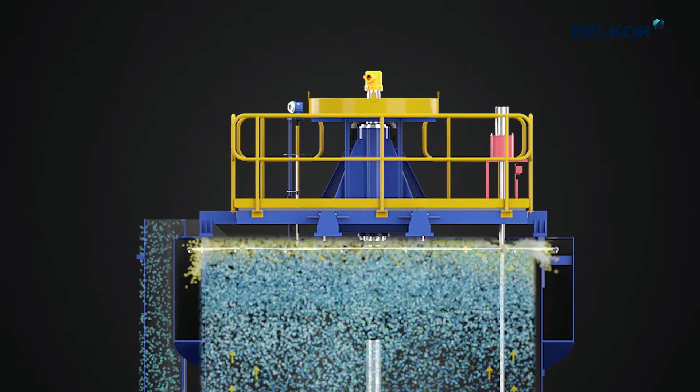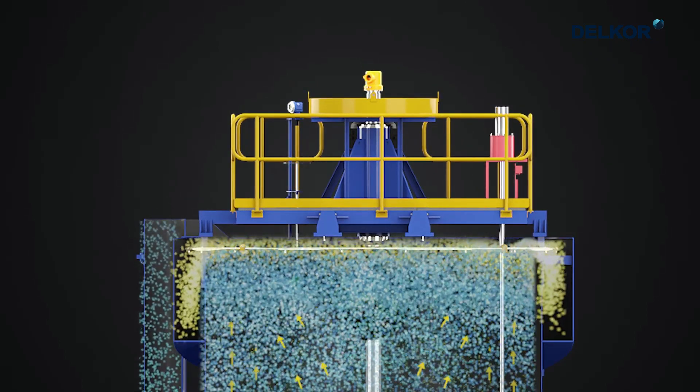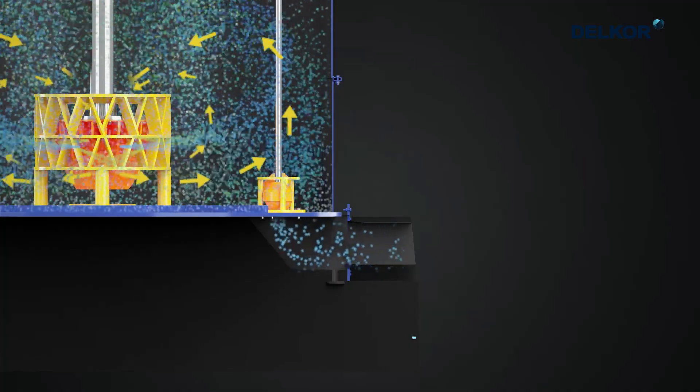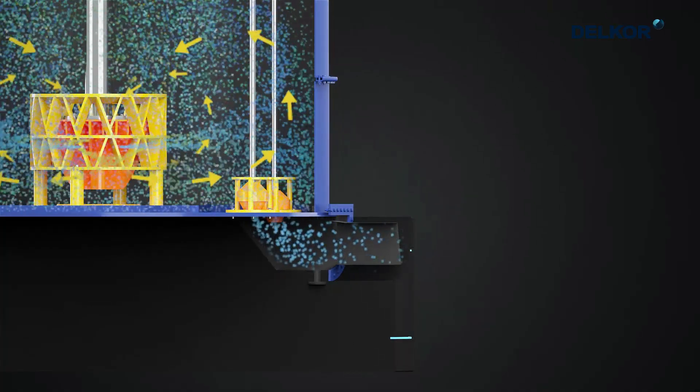The hydrophobic minerals are then carried away by the air bubbles to the froth zone and discharged into the froth launders. The hydrophilic mineral particles are taken out from the bottom of the tank through dart valves.